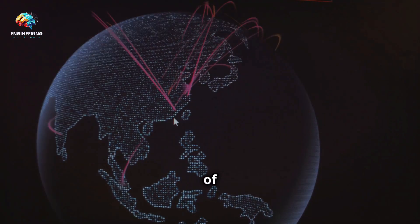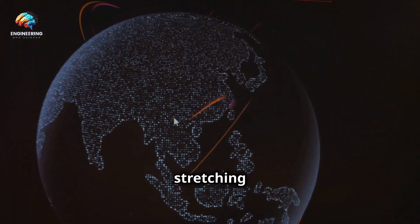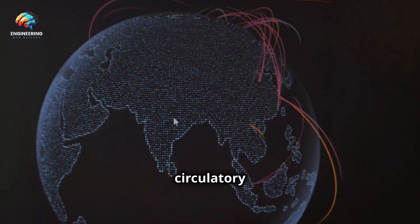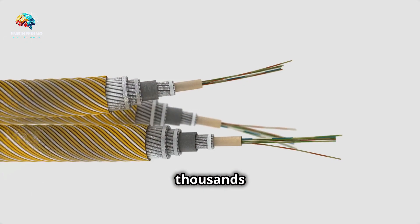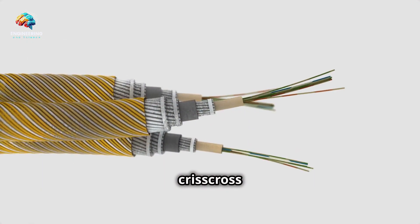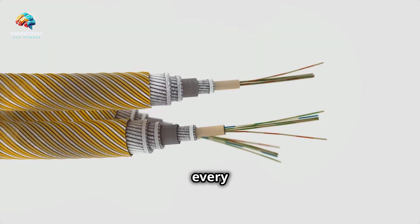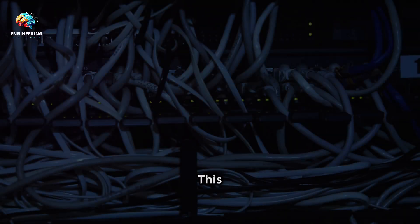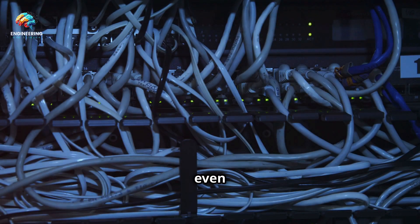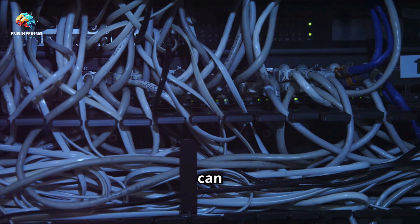The sheer scale of this network is staggering, with cables stretching across the ocean floor like veins in a vast circulatory system. Hundreds of thousands of miles of these cables crisscross the ocean floor, connecting every corner of the globe. This extensive network ensures that even the most remote locations can stay connected.